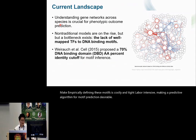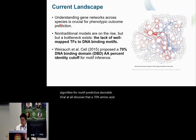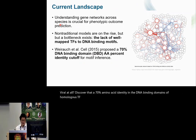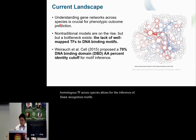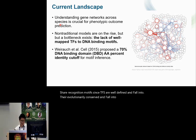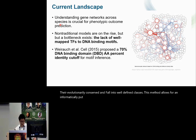Viroc et al. discovered that a 70% amino acid identity in the DNA binding domains of homologous TFs across species allows for the inference of shared recognition motifs. Since TFs are evolutionarily conserved and fall into well-defined classes, this method allows for an informatically inferred prediction of motifs in these non-model organisms.